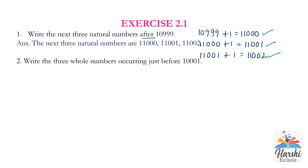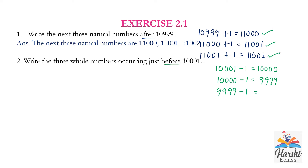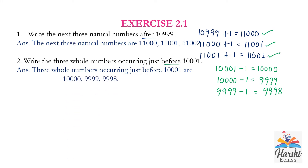Second question: write the three whole numbers occurring just before 10,001. 'Just before' means we need to find the predecessor. To find the predecessor, we subtract 1. So 10,001 minus 1 equals 10,000; 10,000 minus 1 equals 9,999; 9,999 minus 1 equals 9,998. The three whole numbers just before 10,001 are 10,000; 9,999; 9,998.